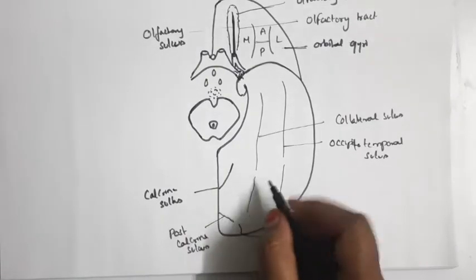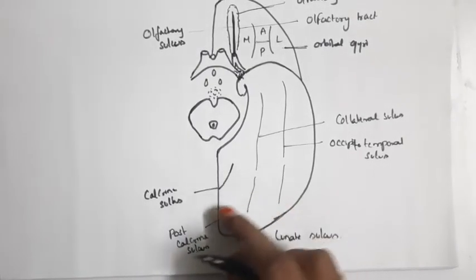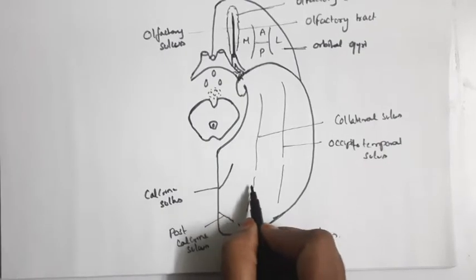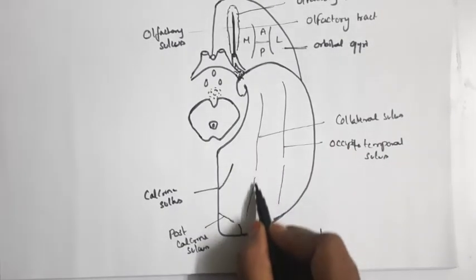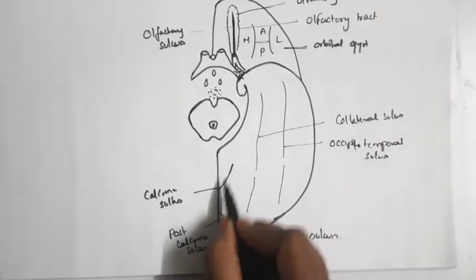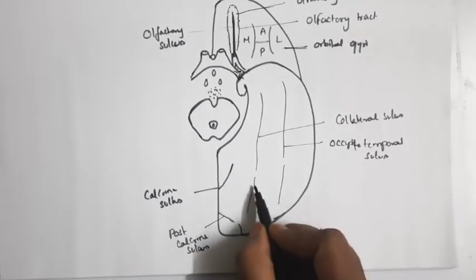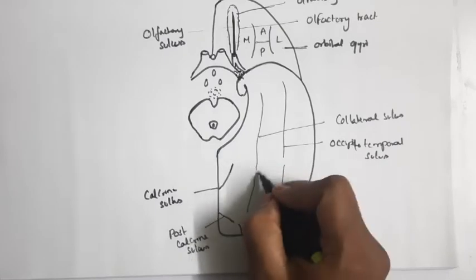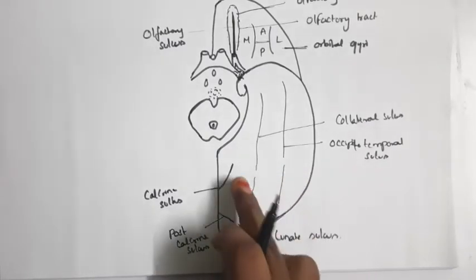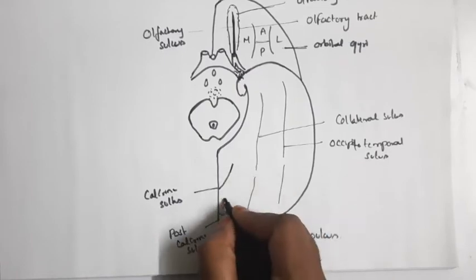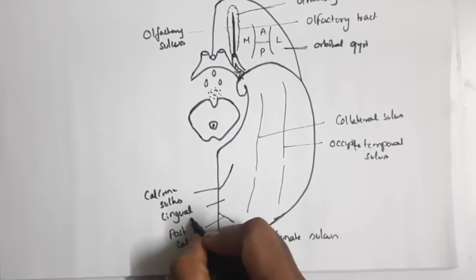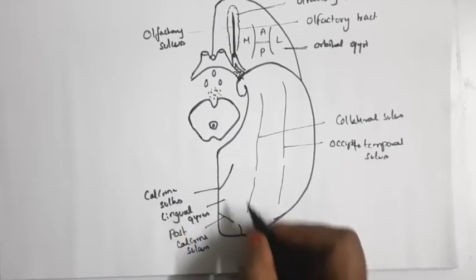This collateral sulcus runs parallel in the same direction as the calcarine sulcus. So the area present between these two sulci — the collateral sulcus and the calcarine sulcus — is known as the lingual gyrus.